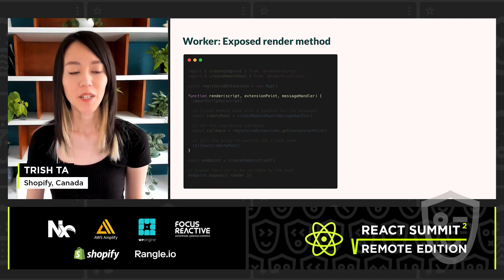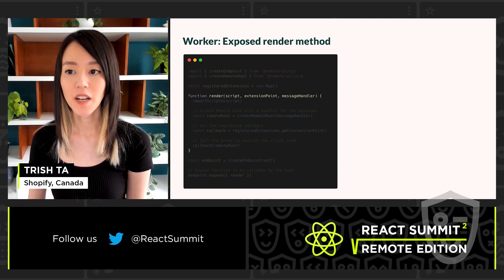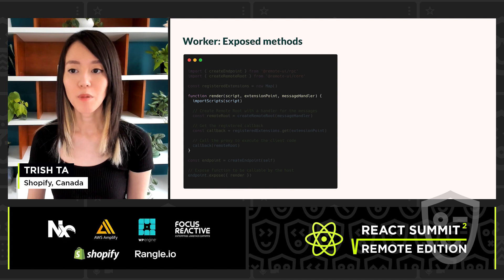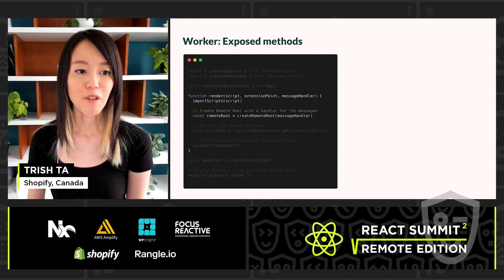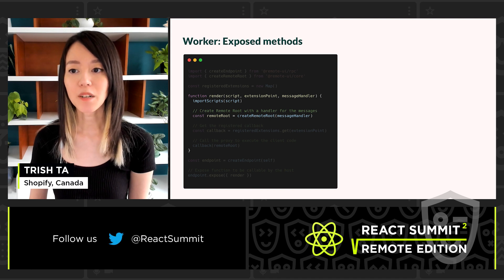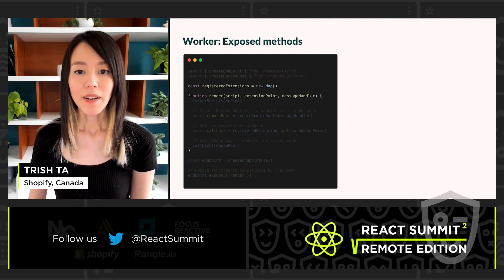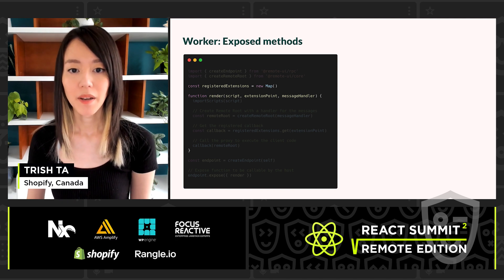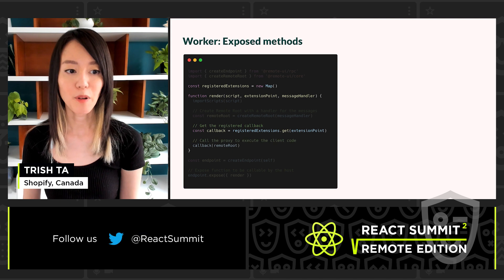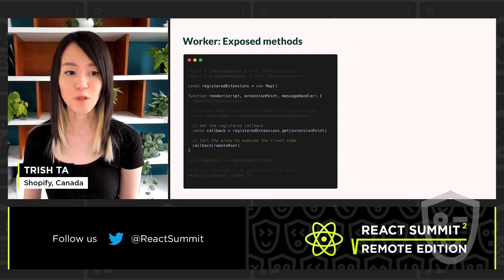Now let's look at what's inside the worker script. Inside the worker, we define a render function the host will be able to call with a script URL, extension point, and a message handler. The first step is to call importScripts with the external script URL to load it. Then we create a remote root and pass our message handler, which sets up the connection between the host receiver and the worker's remote root. We also create a map of registered extension callbacks, relying on the external script to populate the map. When render is called, we get the registered callback for the extension point and call it with the remote root. Here we can also pass in additional data or APIs so that the external script can get access to them.